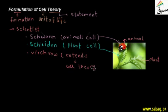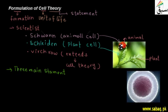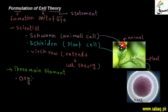The cell theory has three main statements. The first statement is: all organisms are composed of cells. Every living thing, all organisms, are composed of cells.